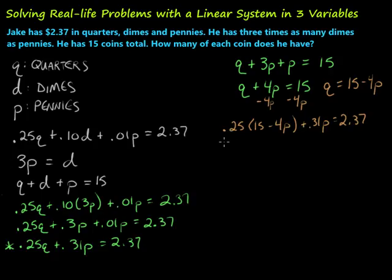We're going to have to distribute that through there. So let's go ahead and do that. 0.25 times 15, that'll be 3.75, and then 0.25 times minus 4P will be minus P or minus 1P. I'll throw a 1 there just to be safe, and then plus 0.31P equals 2.37. Combine like terms now. So that's going to give us 3.75 minus 0.69P equals 2.37.